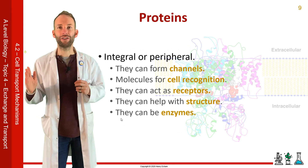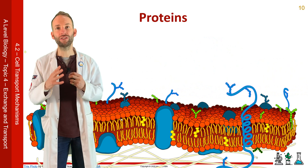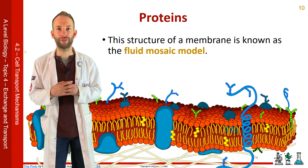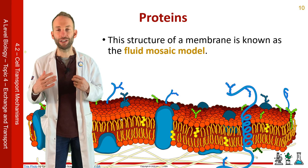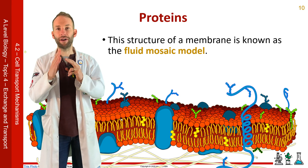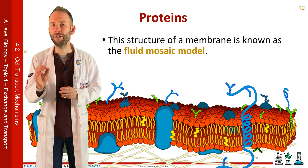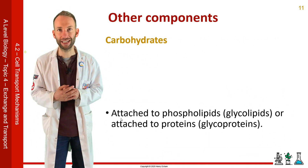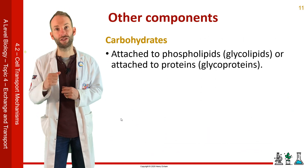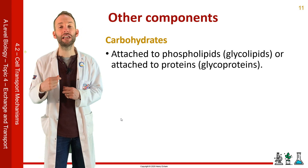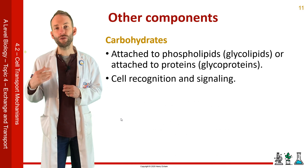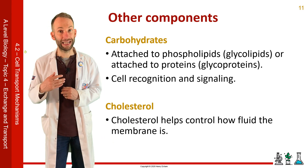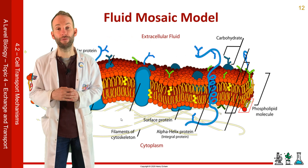These proteins are just dotted throughout the membrane amongst the phospholipids. They are not bonded to the phospholipids — they can move about and change position depending on what the cell is doing. This is why we call this structure of the membrane the fluid mosaic model: it can move around and it's a mosaic with all the proteins in there. Carbohydrates can be attached to either the phospholipids or the proteins to make glycolipids or glycoproteins, and they're important with cell recognition and cell signalling. You also get cholesterol in between phospholipids, which helps control how fluid the membrane is. You should be able to label a diagram like this of the fluid mosaic model.